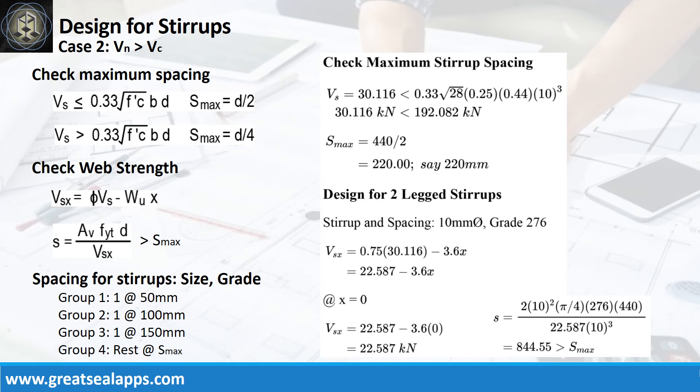The spacing of stirrups is as follows: one at 50 mm, one at 100 mm, one at 150 mm, and the rest at 220 mm.